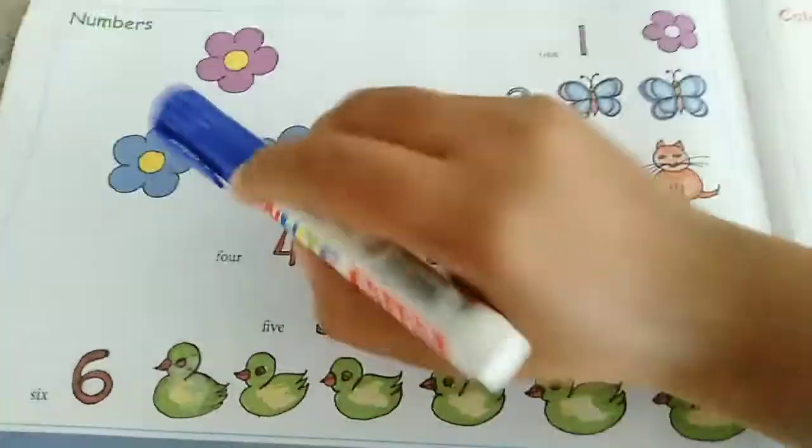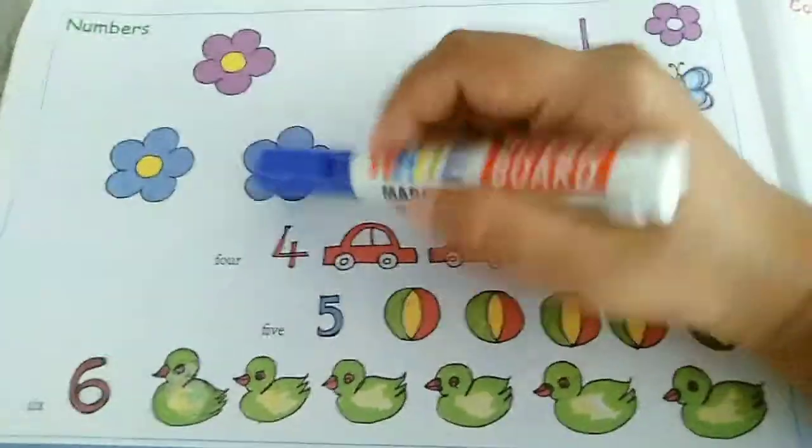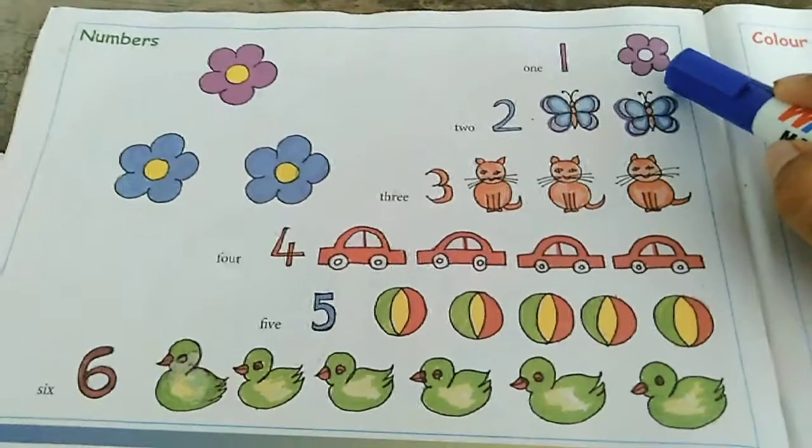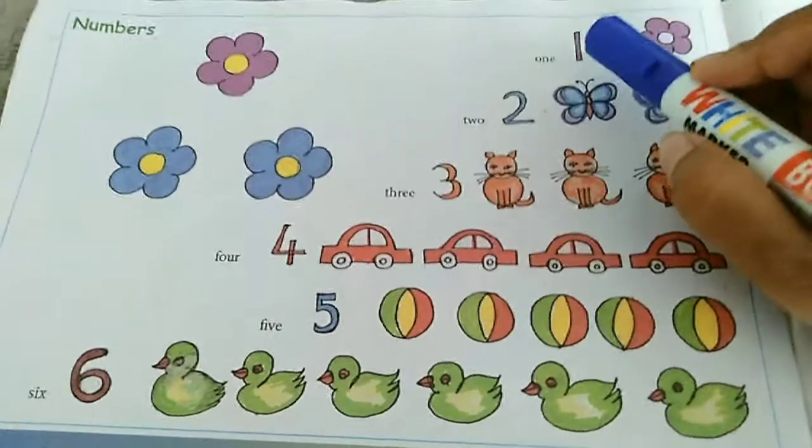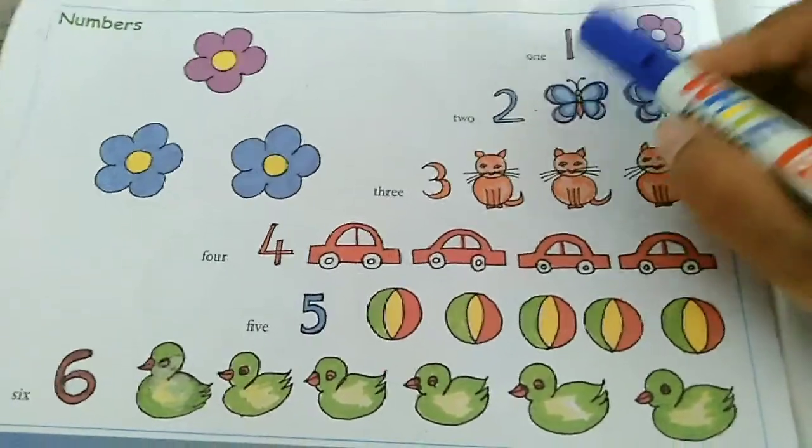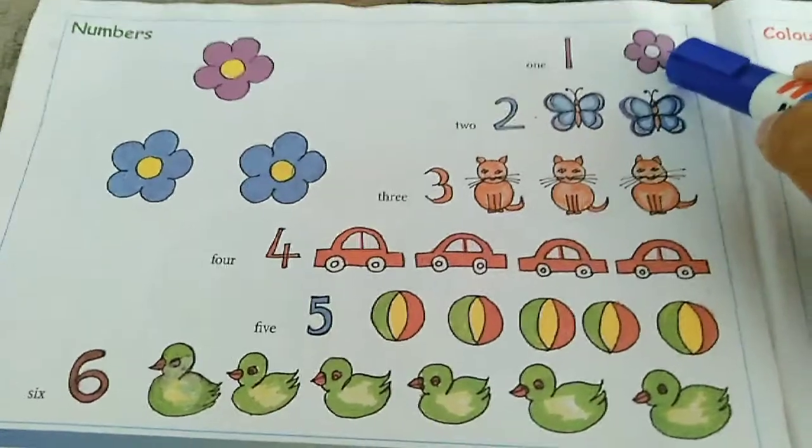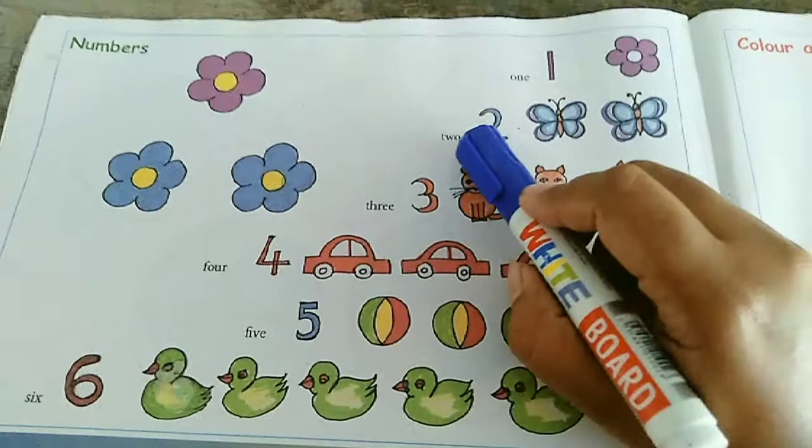Here you can see how many flowers? One, two, three. Three flowers. Here, how many flowers are given? Only one. So one. What is the first number? One. One flower. One flower.